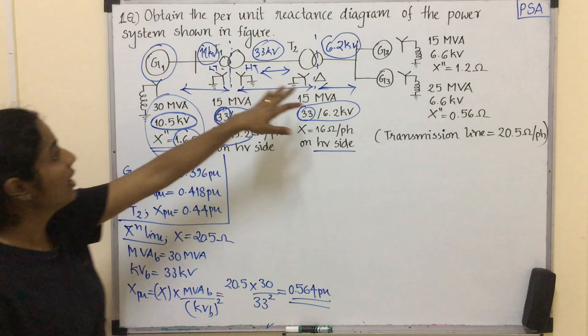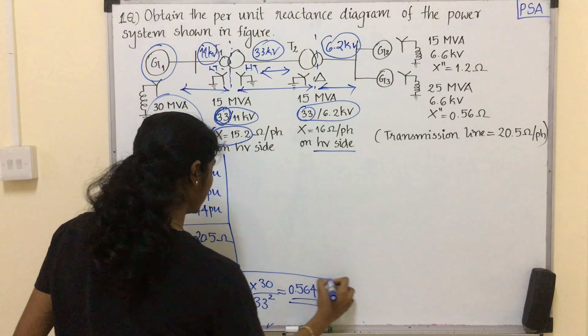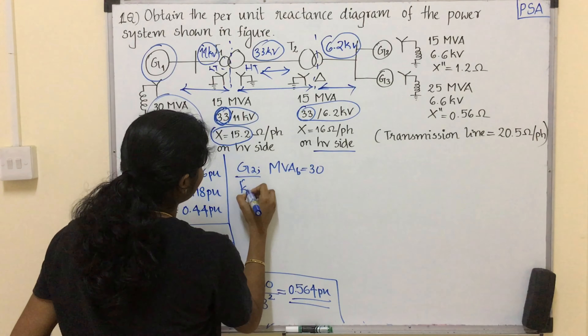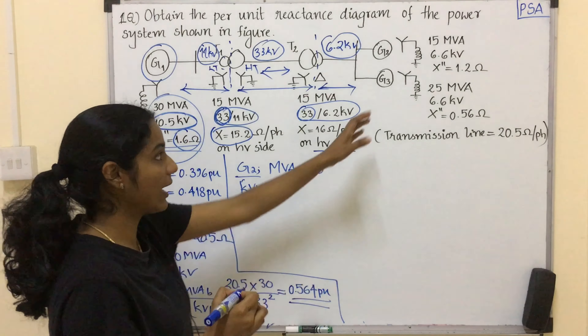Now let's see generator G2. For generator G2, MVA base equals 30 and KV base equals the base value for this region, which is 6.2 kV. The sub-transient reactance is 1.2 ohm. So X per unit equals 1.2 multiplied by MVA base 30 divided by KV base squared, which is 6.2 squared. The value will be 0.936 per unit.